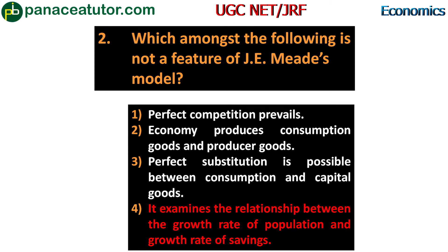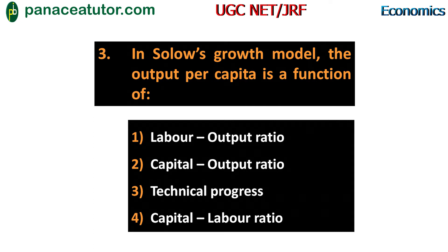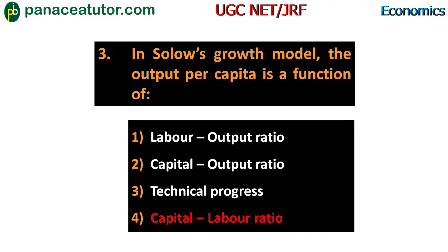Next question: in Solow's growth model, output per capita is a function of which variable? Options: first, labor output ratio; second, capital output ratio; third, technical progress; fourth, capital-labor ratio. Solow's model says output per capita depends on capital-labor ratio. Options one, two, and three are incorrect. The correct answer is option four - capital-labor ratio.